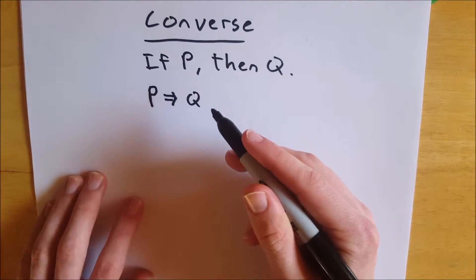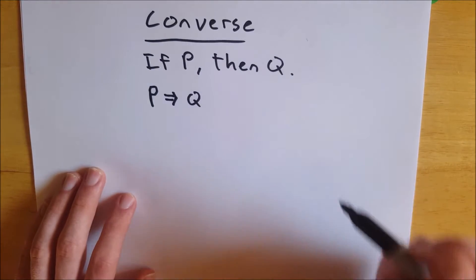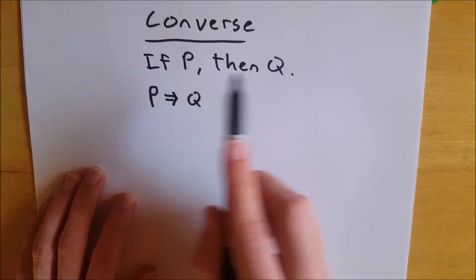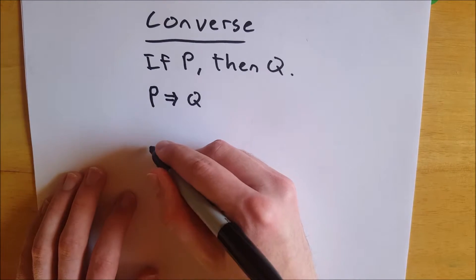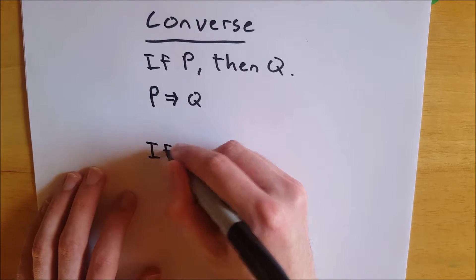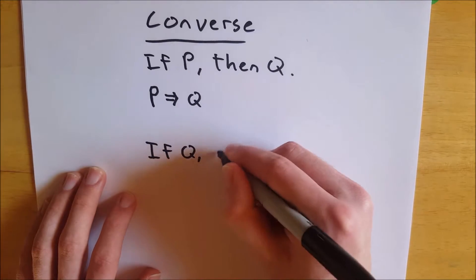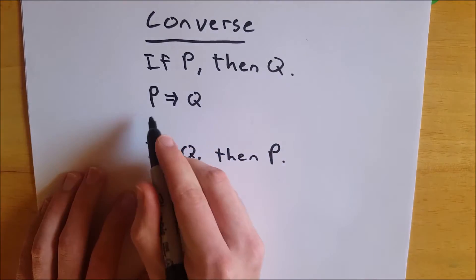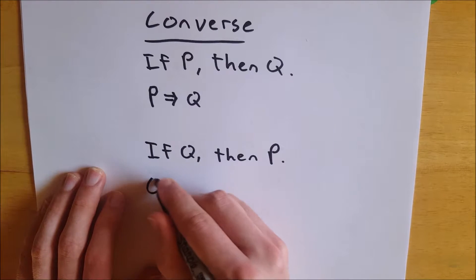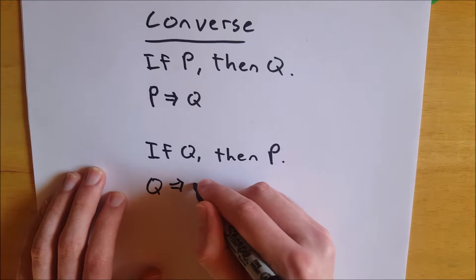So what is the converse of these statements? Well, to find the converse, all you have to do is switch your P and your Q. So the converse of if P, then Q is if Q, then P. So then your shorthand, similarly, just switch your P and Q, and you get Q implies P.